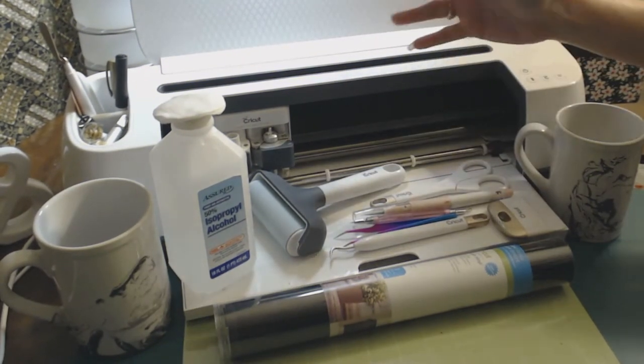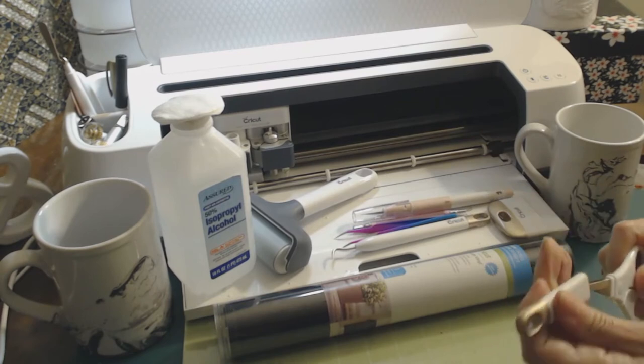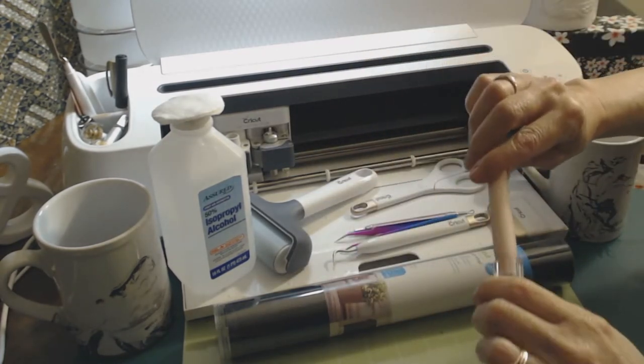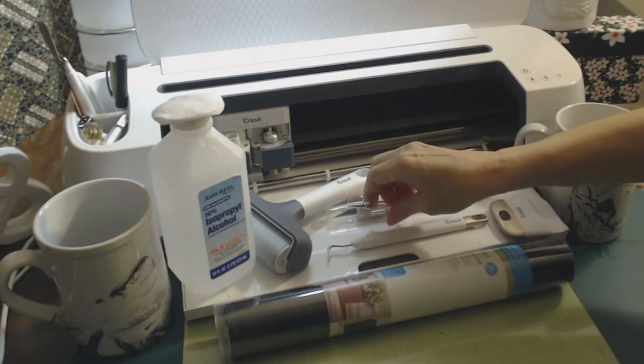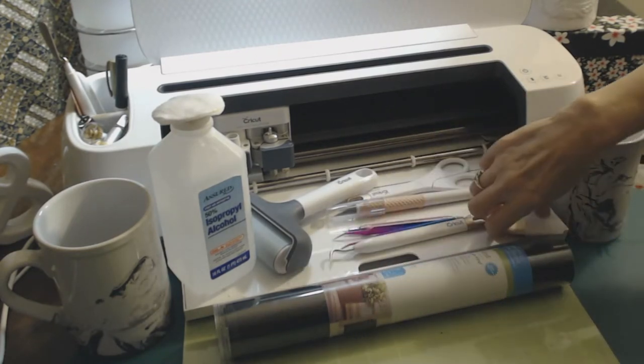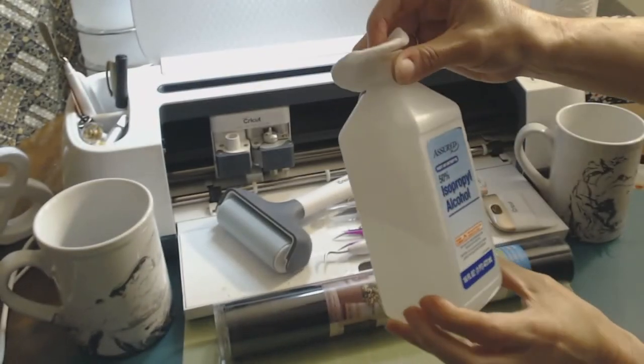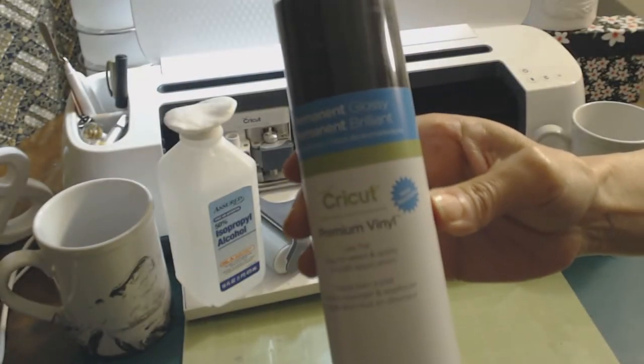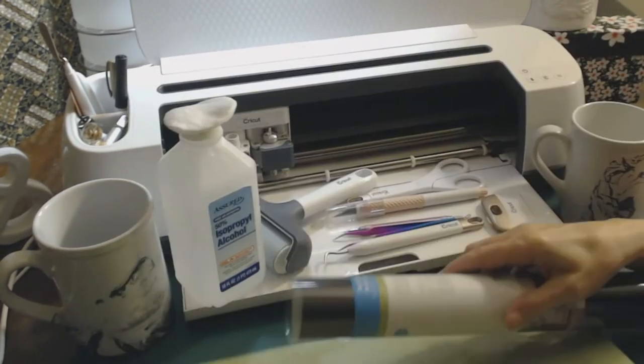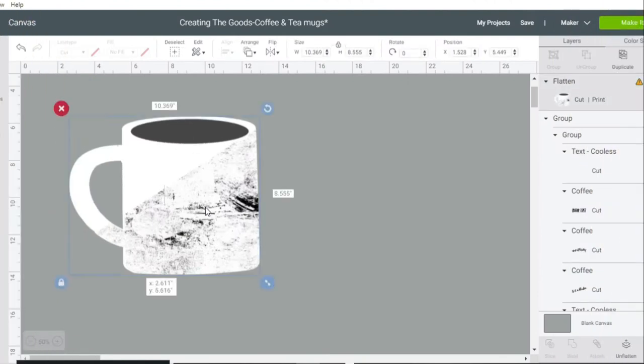What we're going to do is use a cutting machine, I'm using the Maker. We're using a brayer, scissors. I'm using the True Control knife, I love this, it's wonderful. I have weeding tools and a Cricut weeding tool, tweezers, a scraper. Alcohol and cotton. I'm using permanent vinyl in black. You can use whatever color you want. Also using a regular mat. Let's get started in Design Space.